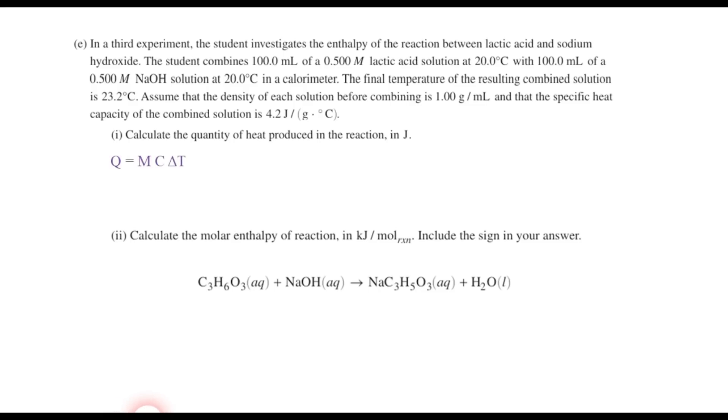So when we plug this into Q equals MC delta T, notice that we're trying to solve for Q. So Q is our unknown. Now what's the total mass of this solution? Well, we have 100 milliliters of one solution being added to 100 milliliters of another solution. So that's a total of 200 milliliters. Now it says the density is 1 gram per milliliter. So if it's 200 milliliters, the mass will be 200 grams. So that's our M here. The problem tells us that the specific heat capacity, C, is 4.2 joules per gram degree Celsius. And the temperature goes from 20 degrees Celsius up to 23.2 degrees Celsius. So that's a rise of 3.2 degrees Celsius.